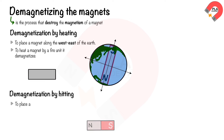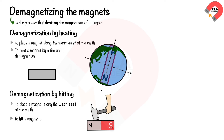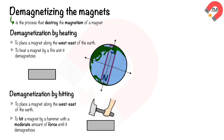Demagnetization by hitting: place a magnet along the west-east direction of the Earth, then hit the magnet with a hammer using a moderate amount of force until it demagnetizes.